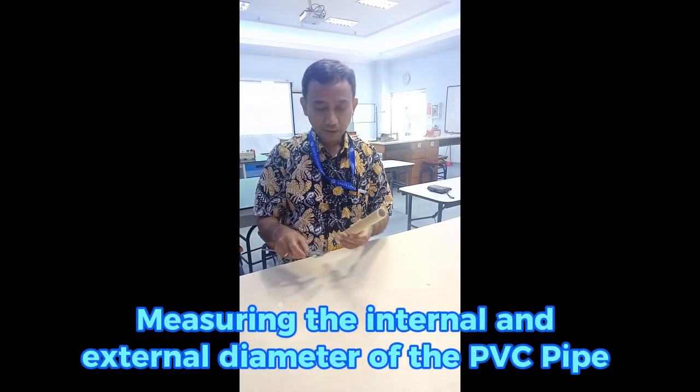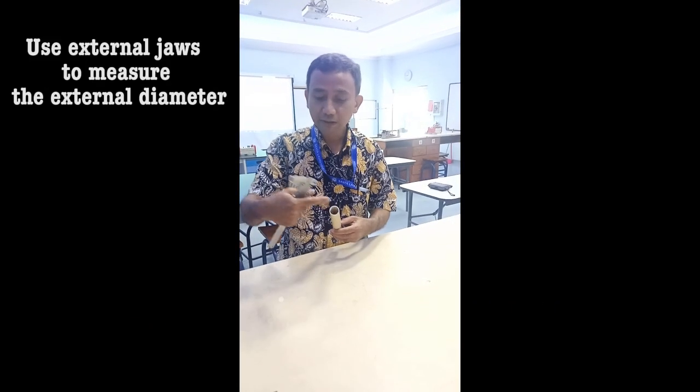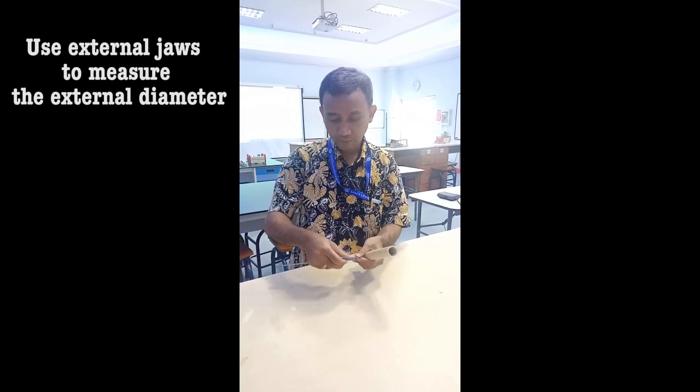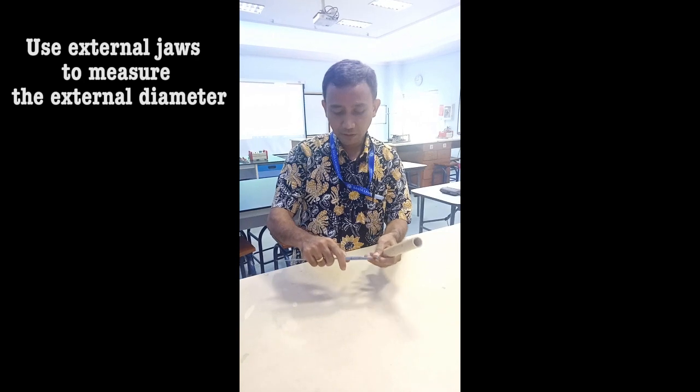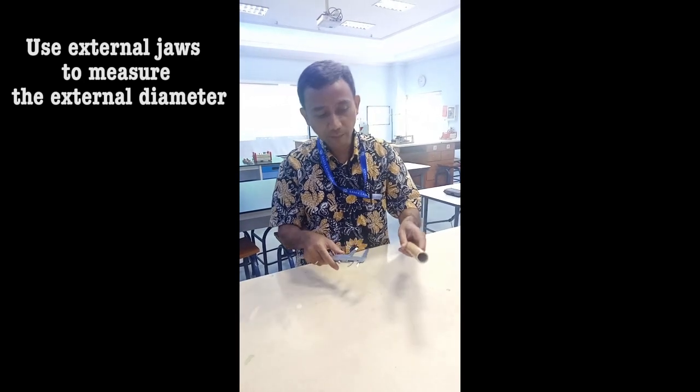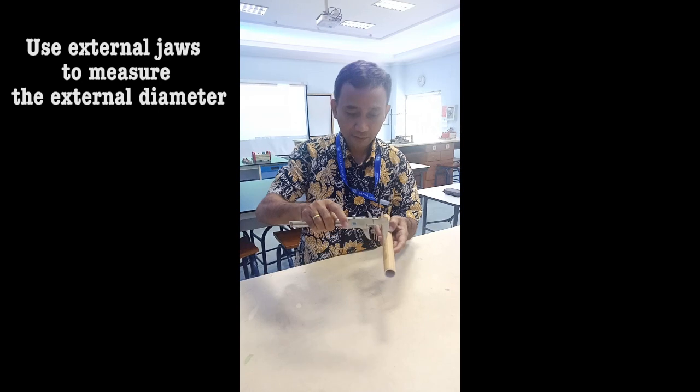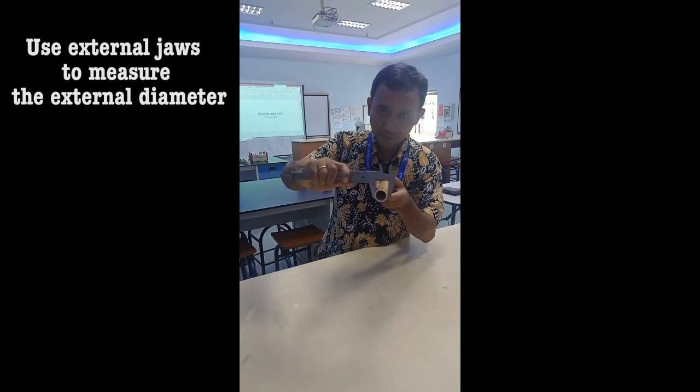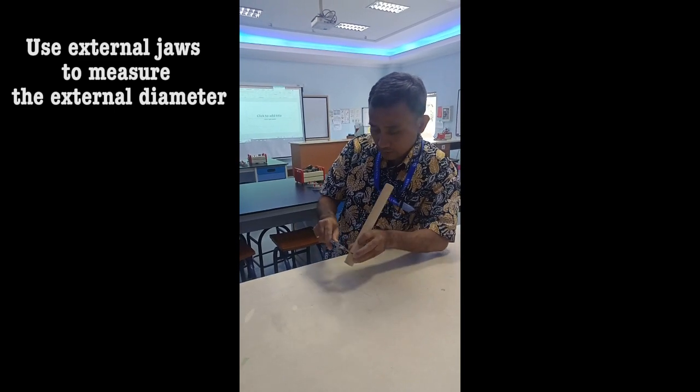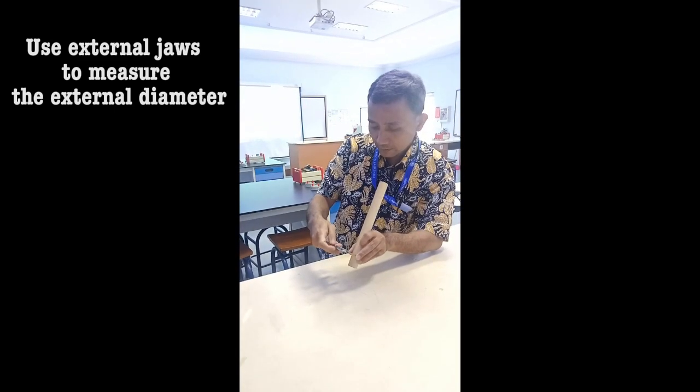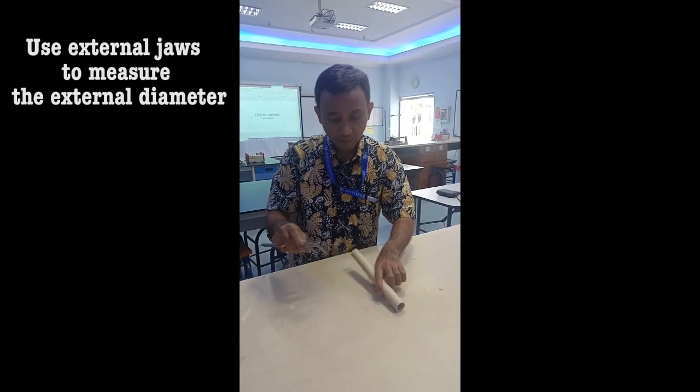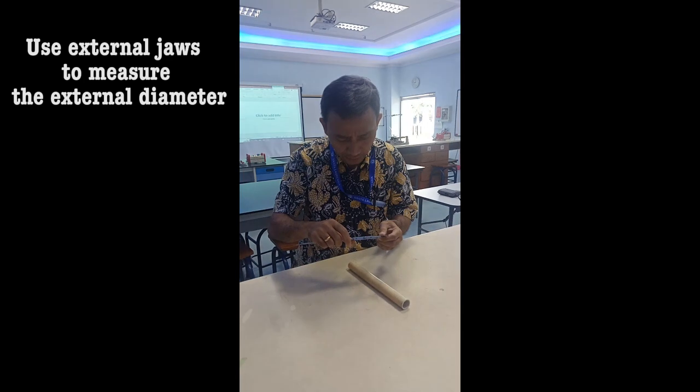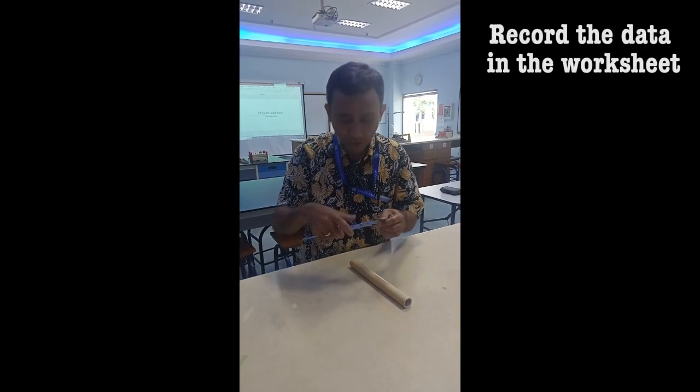Measuring the internal and external diameter of the PVC pipe. Use external jaws to measure the external diameter. Record the data on the worksheet.